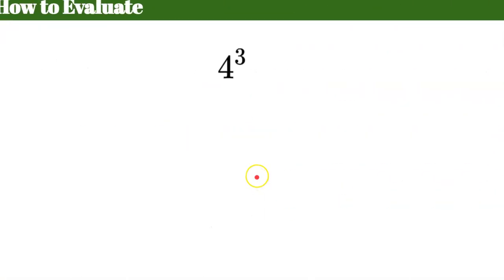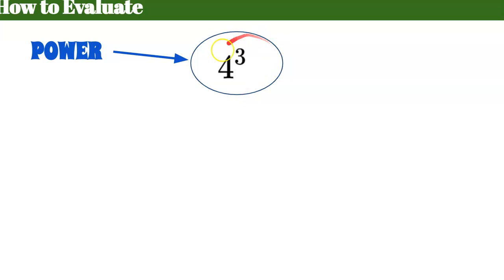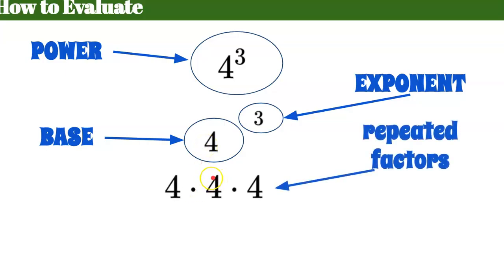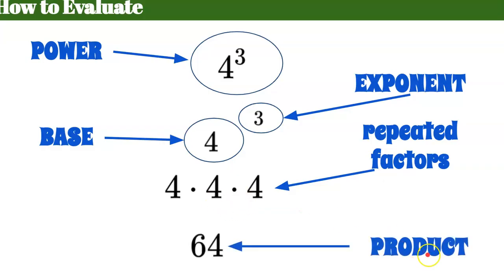Now we need to understand how to evaluate a power. For 4 cubed (4 to the third), the base is 4 and the exponent is 3. The exponent tells me how many times to repeatedly multiply the base. I need three 4s multiplied together: 4 × 4 = 16, and 16 × 4 = 64. Writing repeated multiplication using exponents makes a much smaller expression.